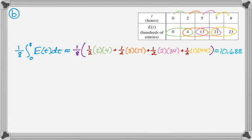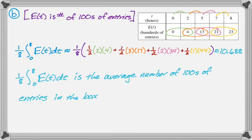All right, so now I need to interpret this. So the E of t is in the number of hundreds of entries, right? So I'm going to say that one eighth integral from zero to eight E of t dt is the average value of the average number of hundreds of entries in the box between noon, which is t equals zero, and then 8 p.m.